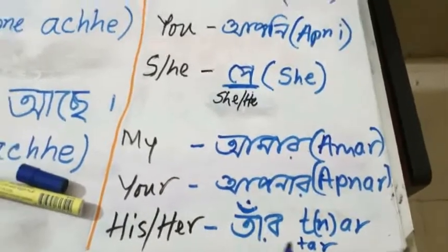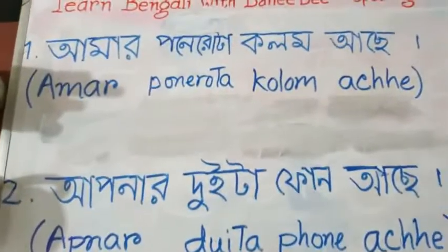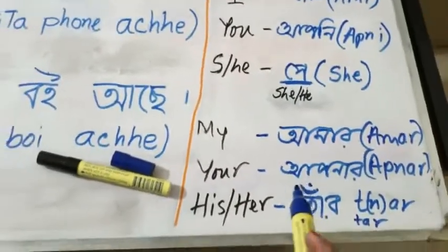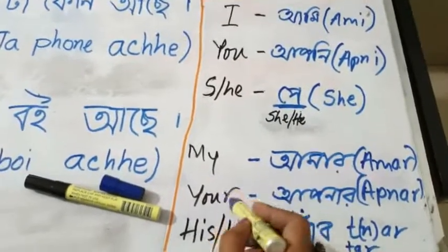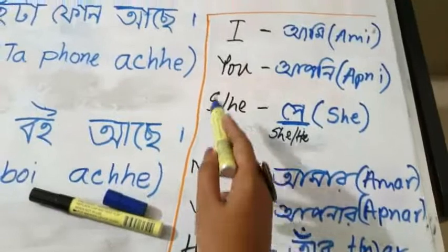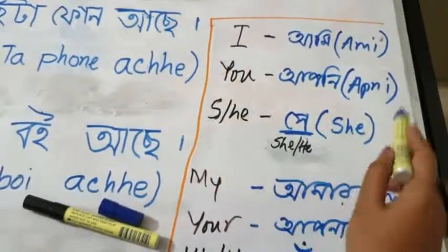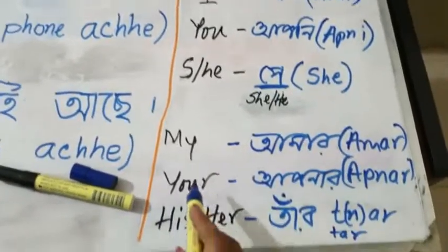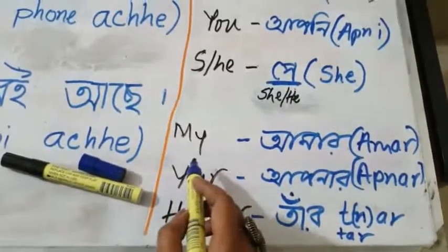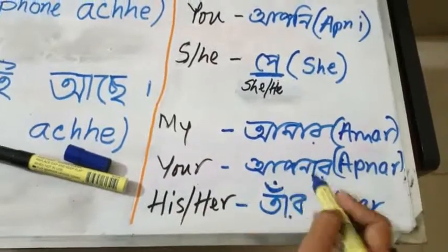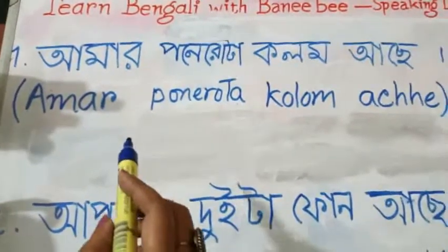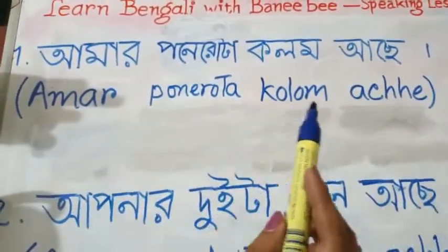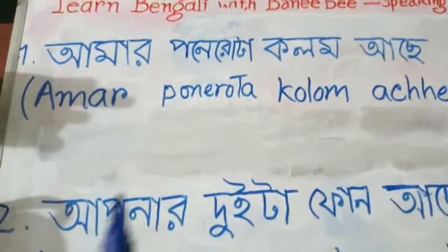So why have I made you look at these words? Because we are going to need them. These are the usual pronouns used for subjects, and these are the possessive forms: 'my,' 'your,' 'his' — 'amar,' 'apnar,' 'tar.' We are going to need these possessive forms today. The first Bangla sentence is 'amar ponerorta kolom ache.'